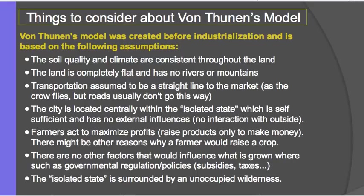Models are just looking at something that happens, finding patterns and trends, and people see these patterns and come up with a model describing what the typical trends are. So just like any model, Von Thunen's model has some assumptions that were made that are not always necessarily true — and even particularly today, since this model was from 1826. Von Thunen's model was created before industrialization, when northern Europe, including Germany where this was developed, was really a farming society.